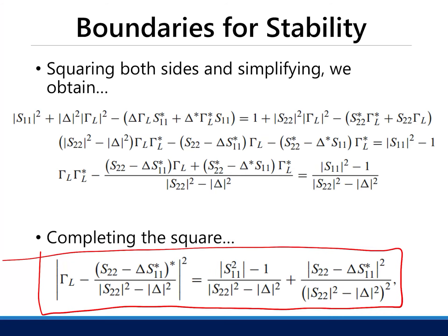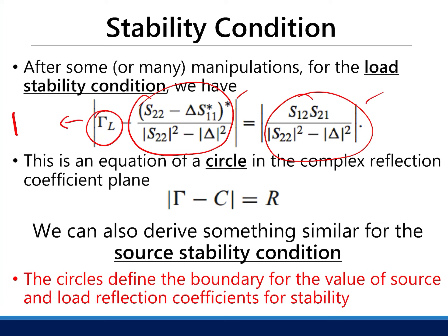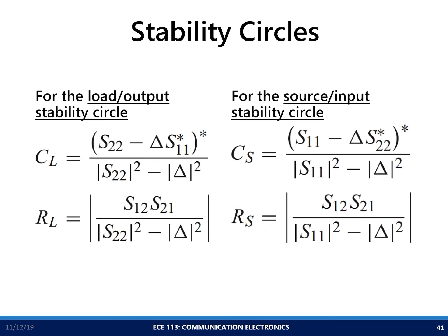Simplifying, we can identify a center C_L and a radius R_L. Since gamma_L is in polar form, C_L represents a shift from the origin and R_L is the radius of that circle. This gives us the load stability circle. The source stability circle has similar equations, with analogous expressions for C_S and R_S.